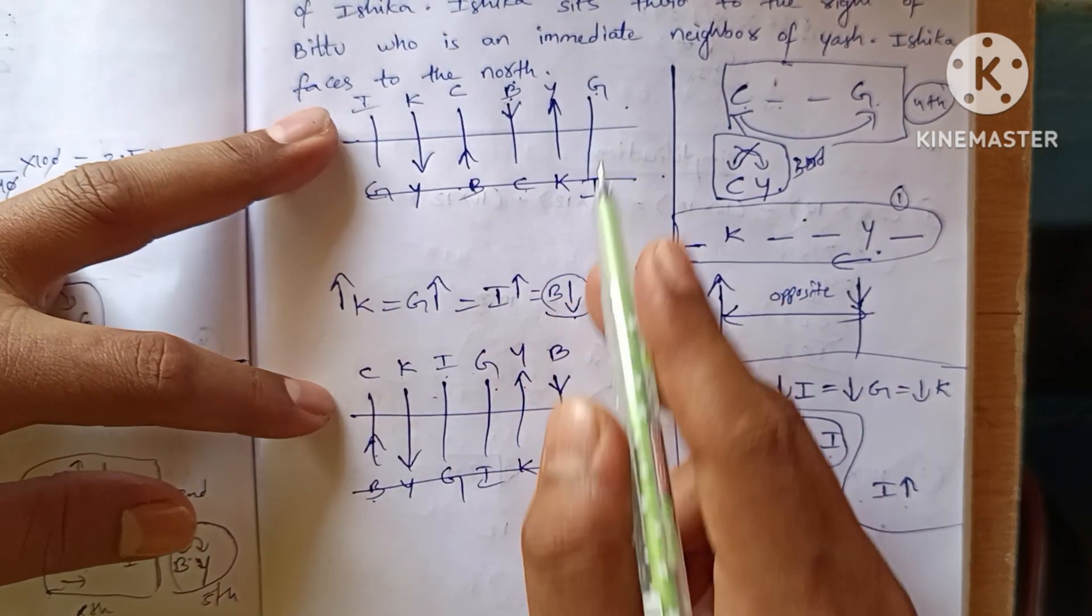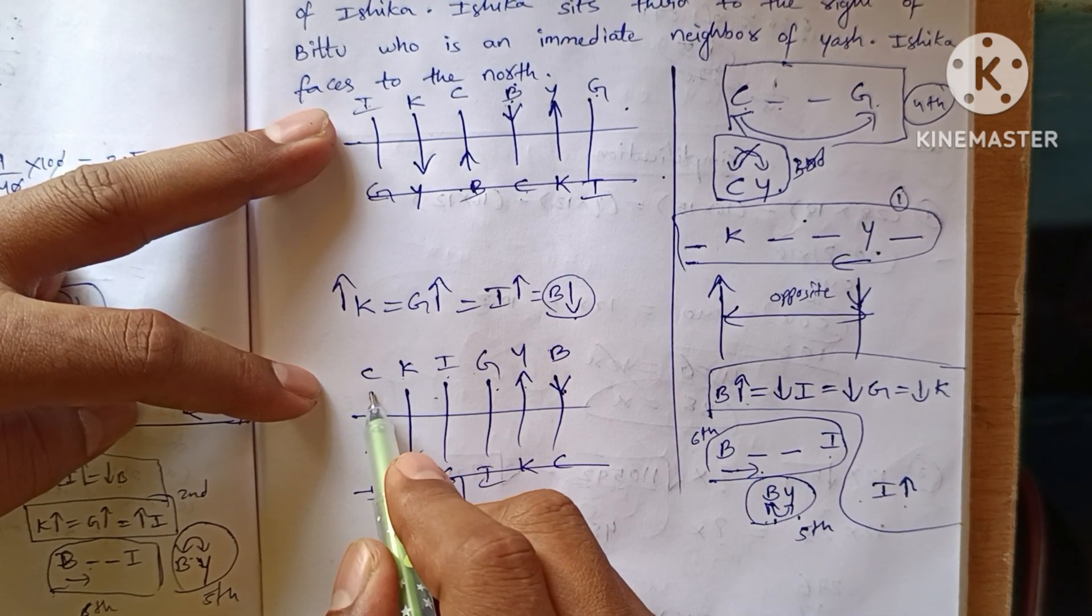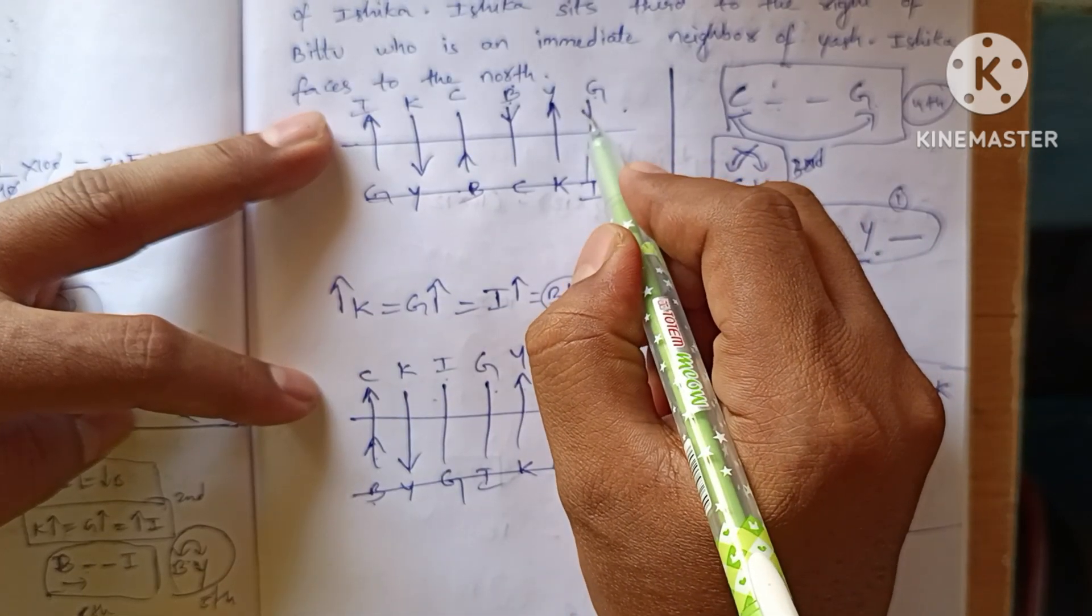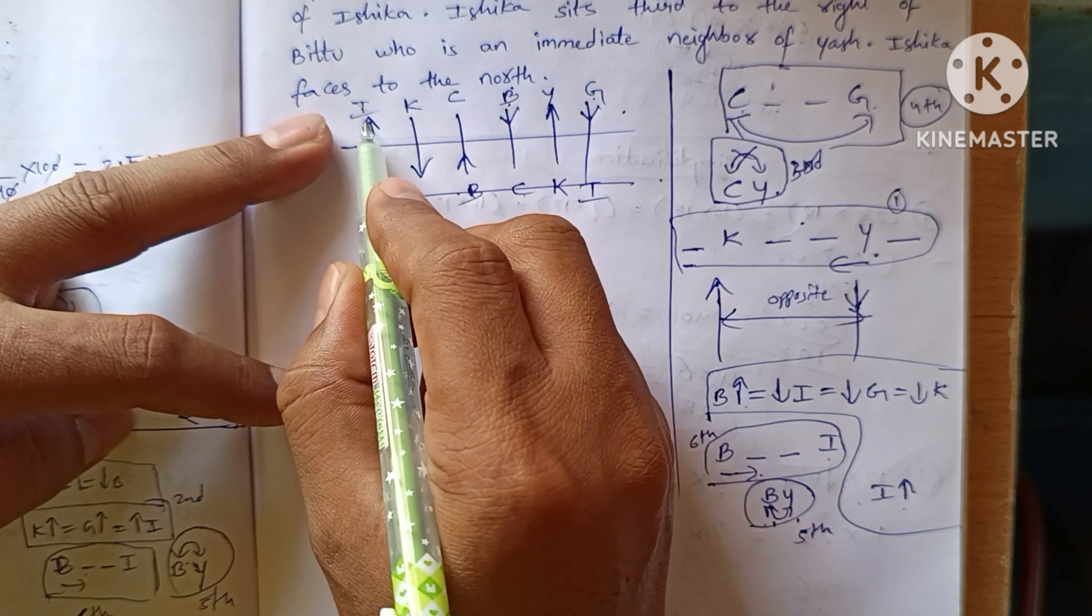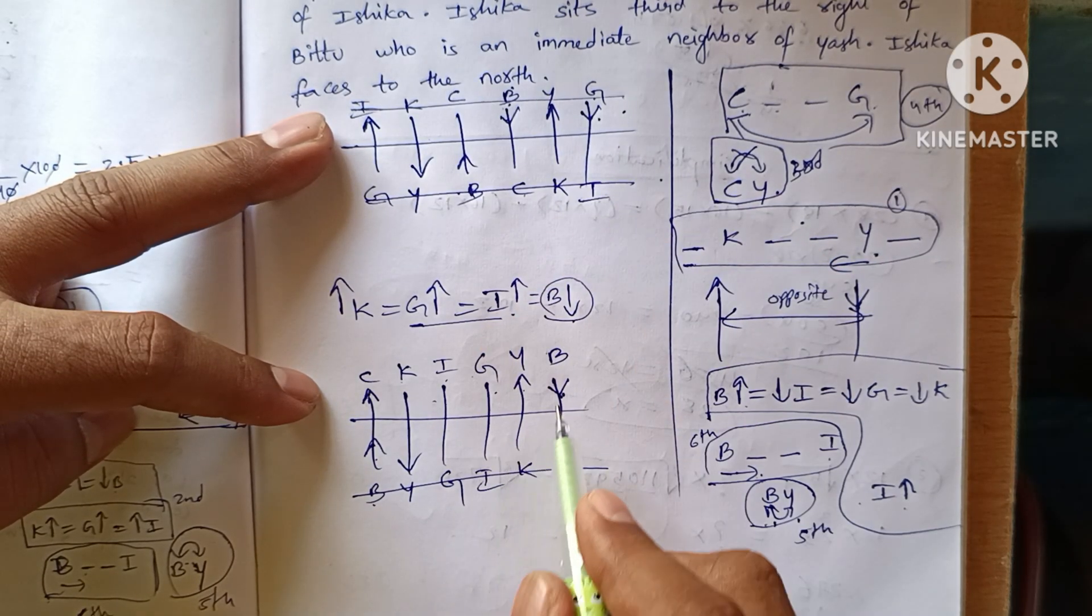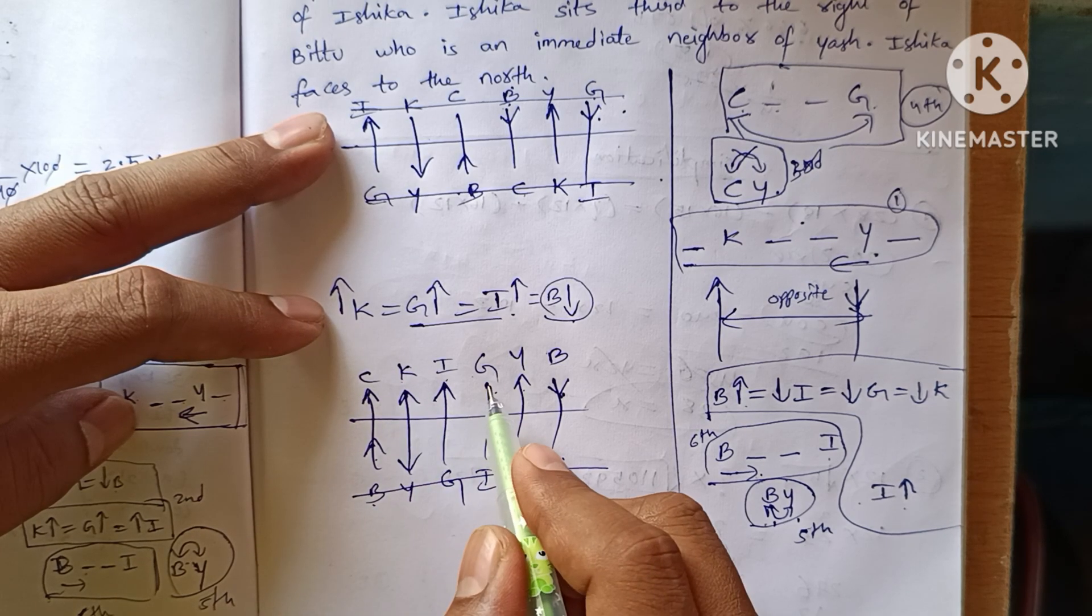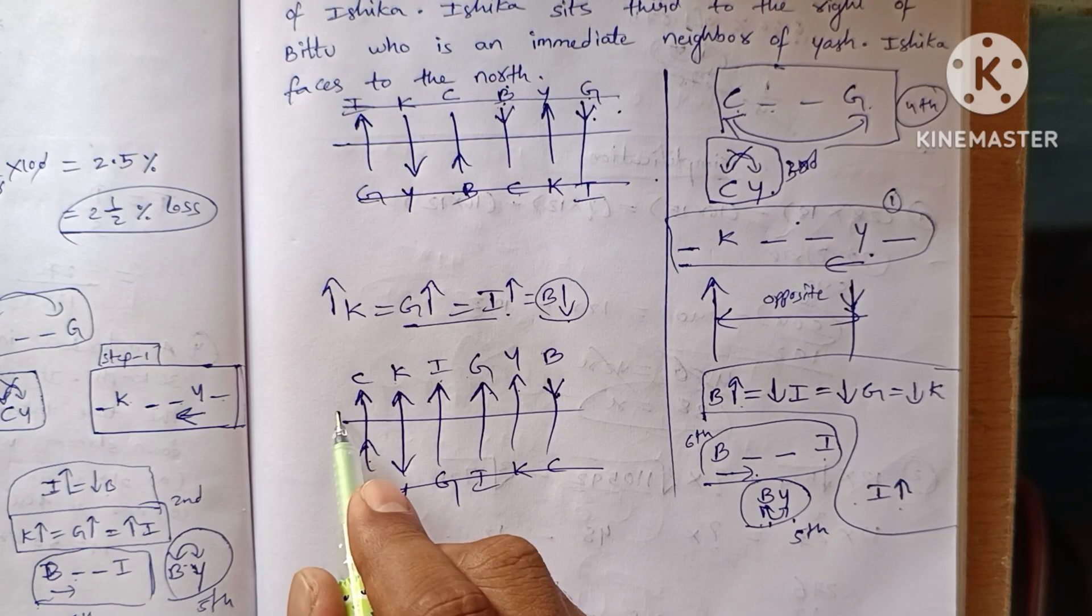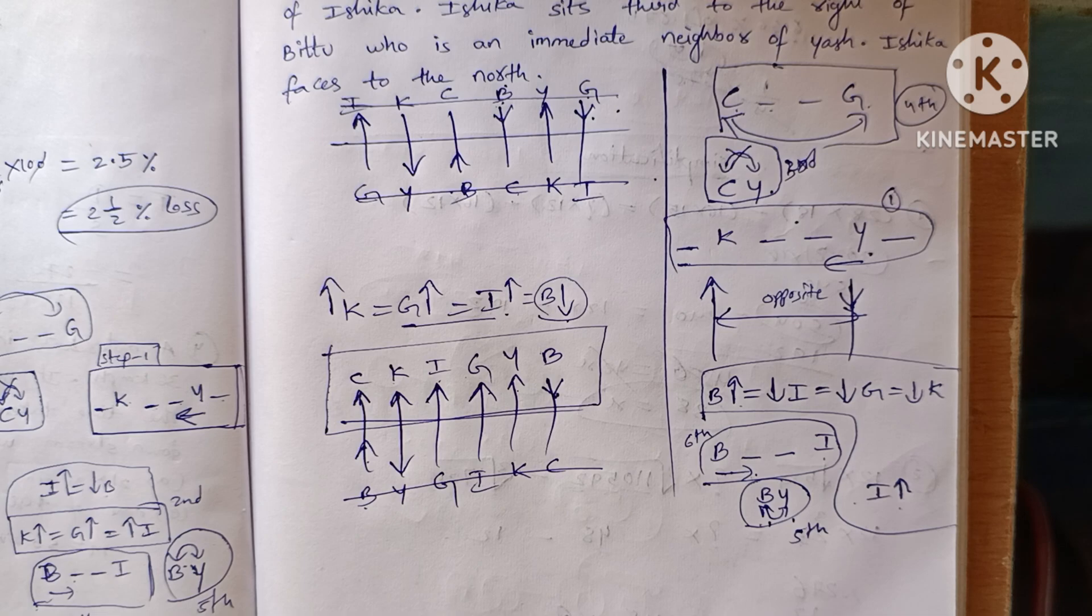Let's see what are the remaining, this one and this one. Here it is opposite direction of the ends. Here Ishika is north, G is south. But Ishika and G are facing the same direction in this case, so it also fails. Ishika faces north, so this is Kapil also facing north. Gauru is also facing north. So our puzzle answer will be this one: C, K, I, G, Y, B. This is our answer.